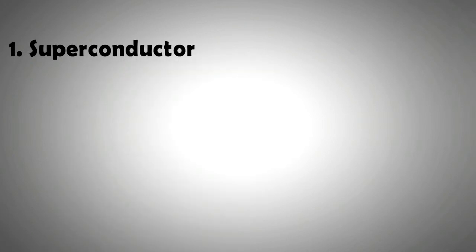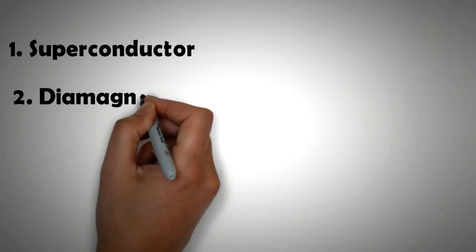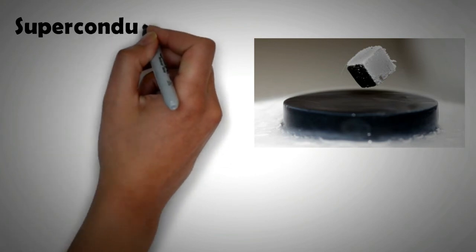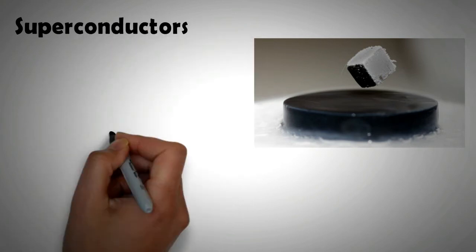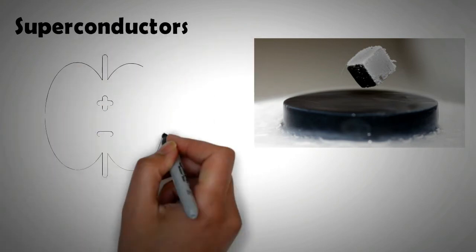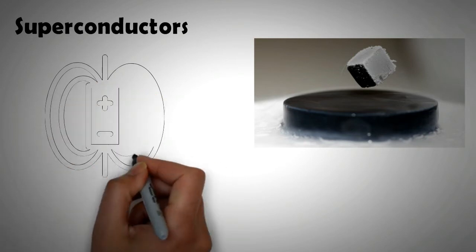First is through superconductors and second is through diamagnetism. Superconductors are basically materials that have zero resistance to any current through them, and thus any current passing through a superconductor can create extremely strong magnetic fields.